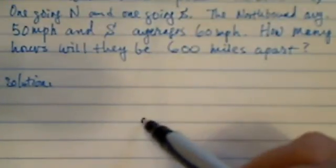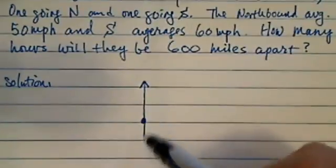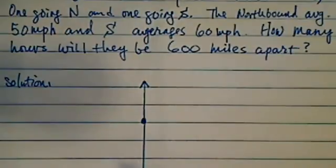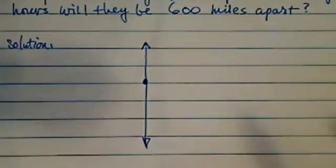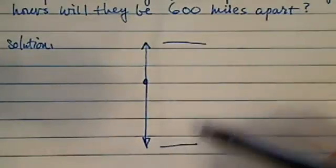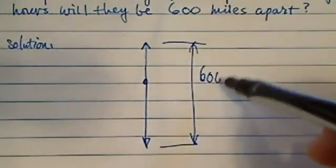So let's right away put it into a picture. Okay, so they both left over here. One going north, one going south. The one going south is a little bit quicker. Okay, so after how many hours they'll be 600 miles apart?